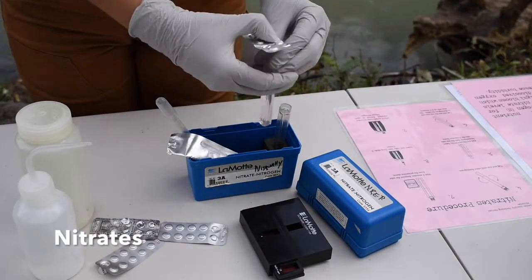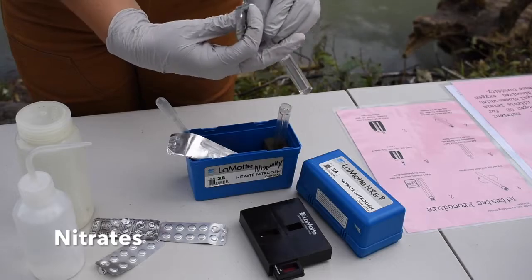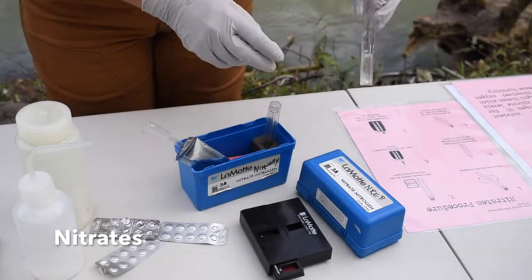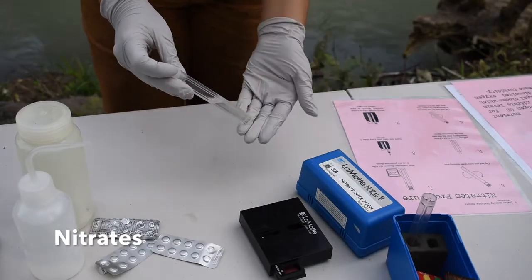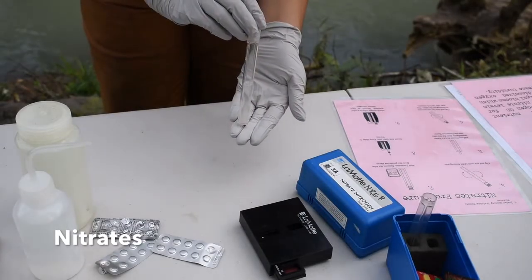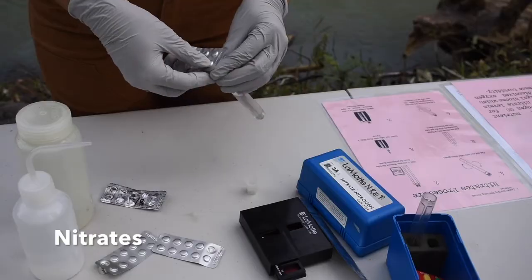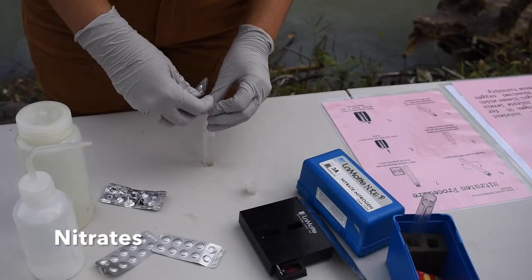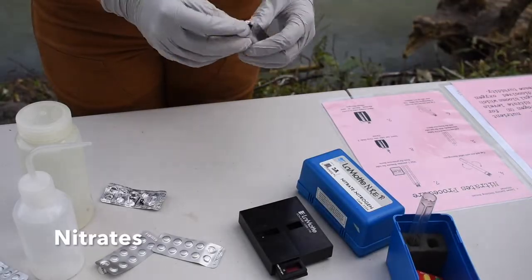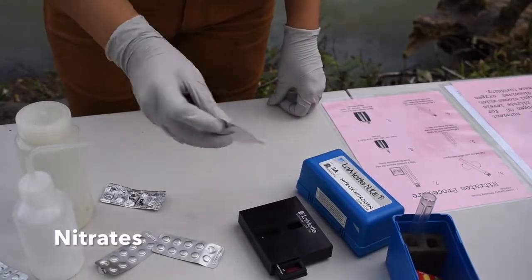Next, we're going to add one nitrate number 1 tablet and cap the test tube and shake it until the tablet is dissolved. Next we're going to add one nitrate number 2 tablet and immediately slide the tube into the protective sleeve. Next we shake to dissolve again and wait 5 minutes.